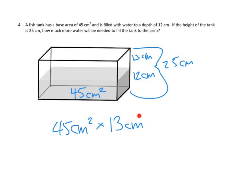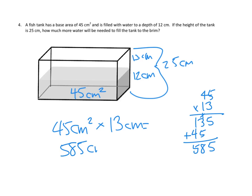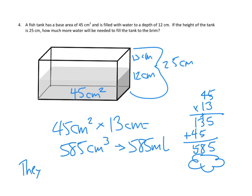So let's go ahead and do 45 times 13. Three times five is 15, record the one. Three times four is 12, plus one is 13. Then one ten times five is five tens, and one ten times four tens is 400. Add those partial products together: 5, 8, 5 — that is 585 cubic centimeters. And cubic centimeters have the same volume as a milliliter, so this is the same as 585 milliliters. They need 585 milliliters to fill the tank.